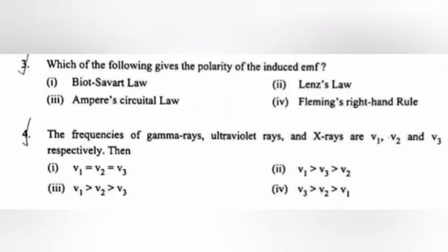Question 3: Which of the following gives the polarity of the induced EMF? Answer: Lenz's law. Question 4: The frequencies of gamma rays, ultraviolet rays and X-rays are V1, V2 and V3 respectively. Then. Answer: V1 is greater than V3 is greater than V2.